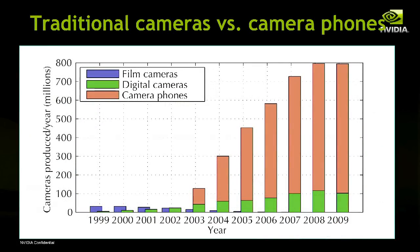To motivate you a little bit, I wanted to show some numbers about the size of this market. When I was first asked to do mobile computer vision, I was a little nervous because we're talking about a processor that's only one or two watts, and computer vision is hard even with a thousand watts of power. But what really sold me is the sheer volume of units — we're close to a billion camera phones sold every year, meaning a lot of opportunities for computer vision apps.